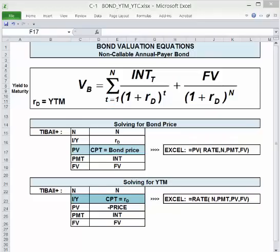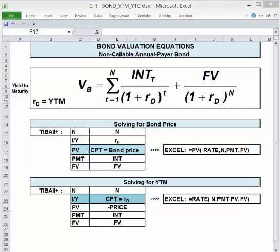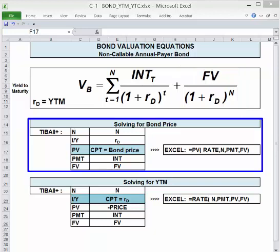This first equation is the basic bond valuation formula for a non-callable annual payer bond, meaning it pays coupons annually. The value of a bond is the sum of the present value of the annuity of the coupon payments plus the present value of the face value paid back at maturity. We use N as the number of periods to maturity, IY is the yield to maturity or the current market rate, PV is the current price of the bond and it's negative—it's what you have to pay to buy the stream of coupon payments and the face value at maturity. The sign convention applies here. Payment is the periodic coupon payment and it's positive, it's an inflow. Face value is the face value of the bond to be paid at maturity, it's positive as well.